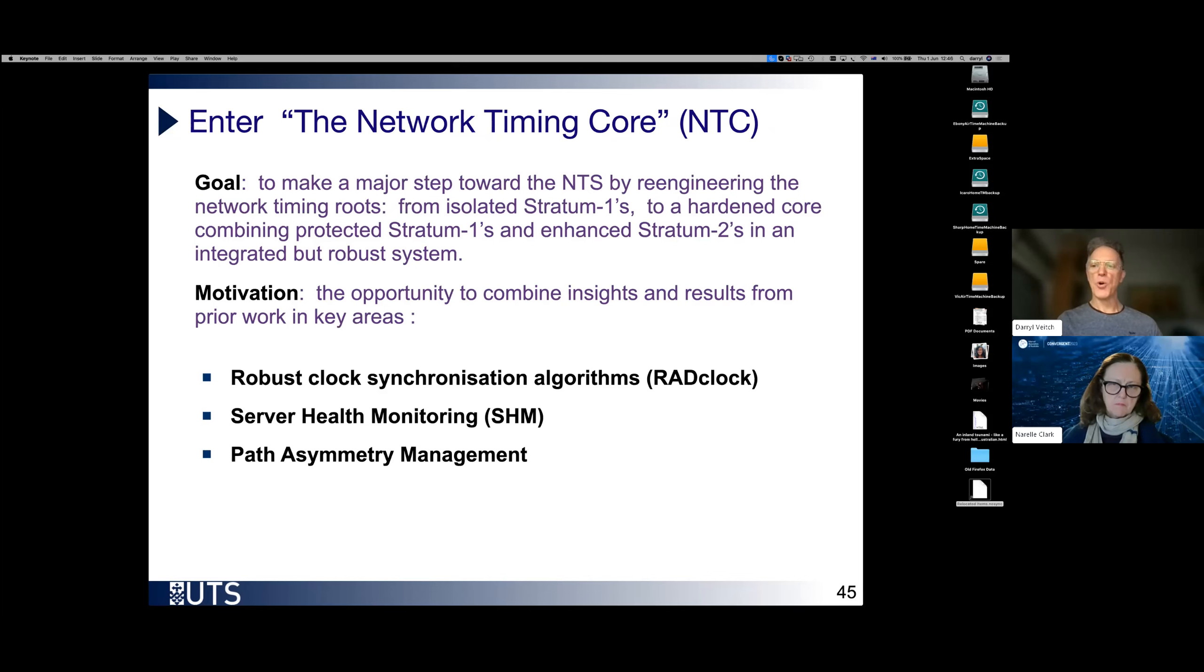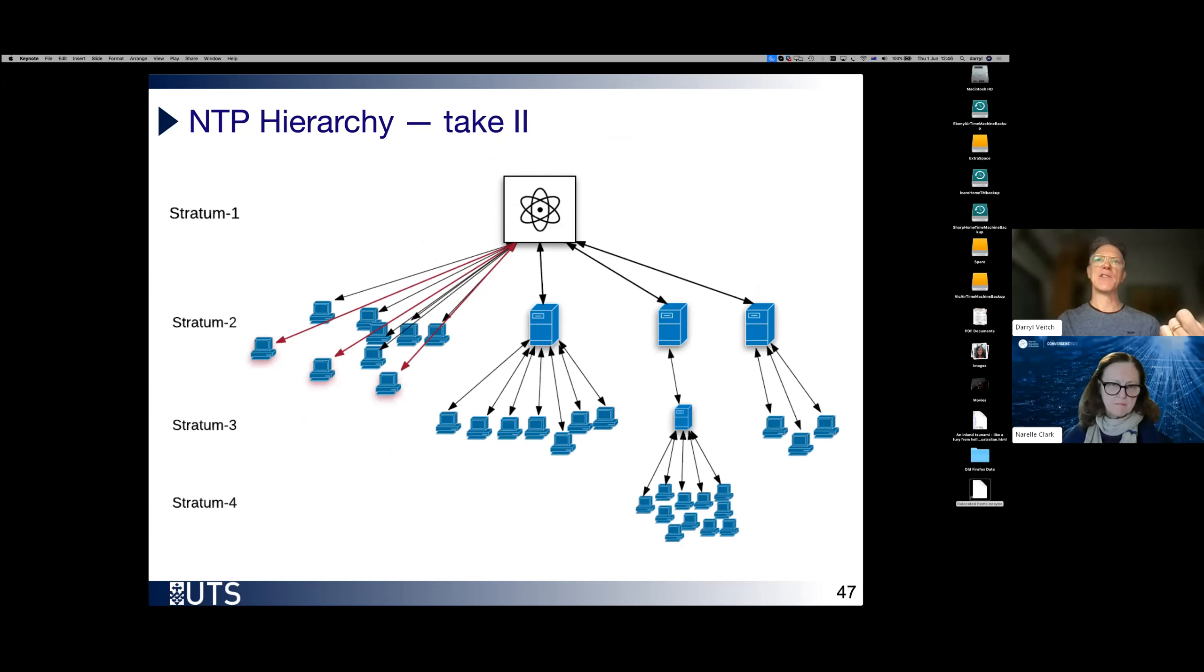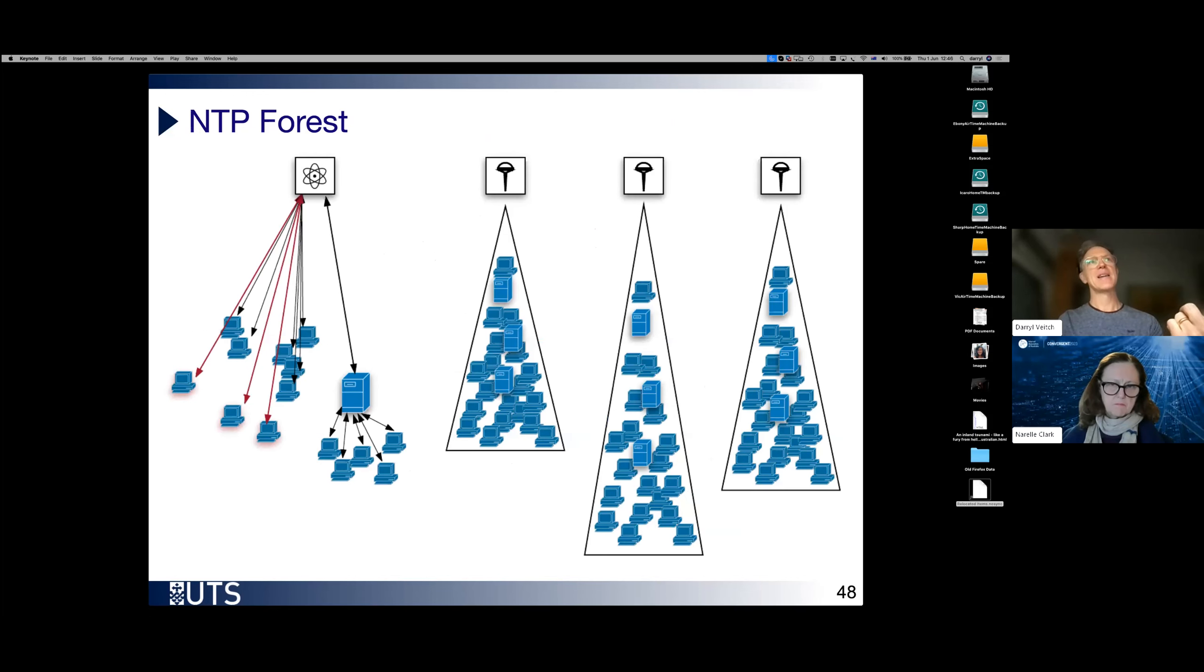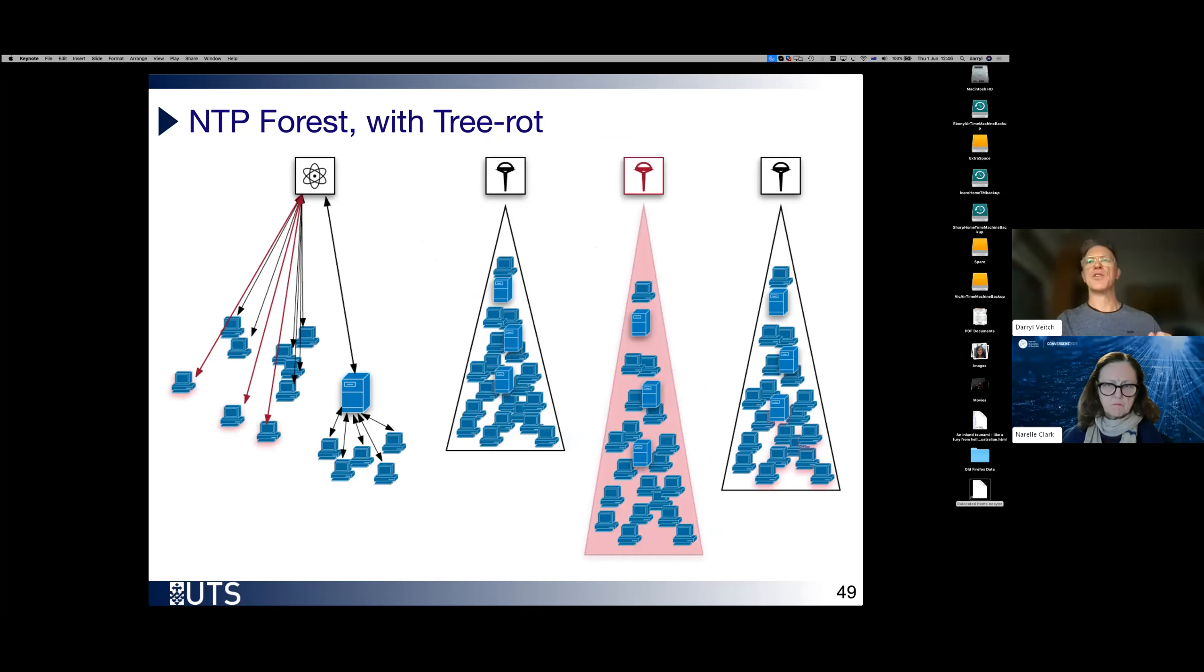We want to re-imagine the core. At the moment, as I said, what do we have? We have a system, a hierarchical system supposed to look like this. But in reality, it looks more like this. With too many servers talking directly to strata one. And we have this independent forest. And what happens if one server goes wrong, the whole tree under it goes wrong. So we want to do better than that.